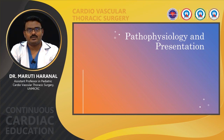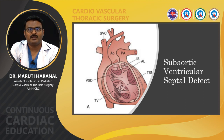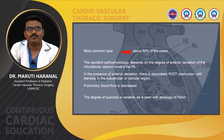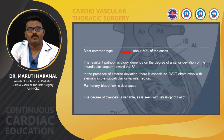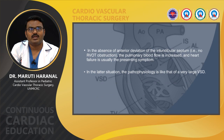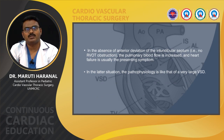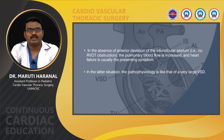Regarding pathophysiology, in those with the subaortic ventricular septal defect — the most common type, representing around 50% of DORV cases — the resultant pathology depends on the degree of anterior deviation of the infundibular septum towards the pulmonary artery. With anterior deviation, there is associated right ventricular outflow tract obstruction with stenosis in the subvalvar or valvular region and decreased pulmonary blood flow. The degree of cyanosis is variable, as seen with tetralogy of Fallot. Without RVOTO, pulmonary blood flow is increased and heart failure is the usual presenting symptom, with pathophysiology more like that of a large VSD.